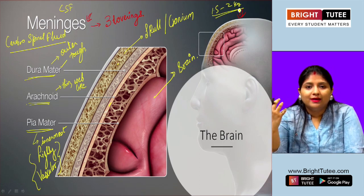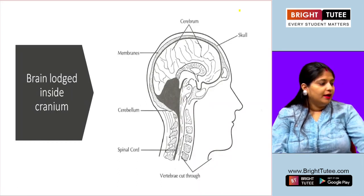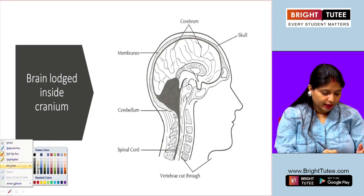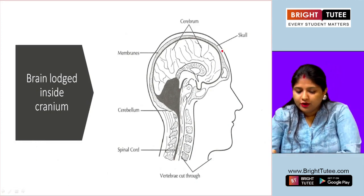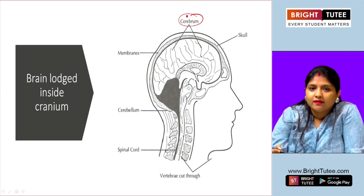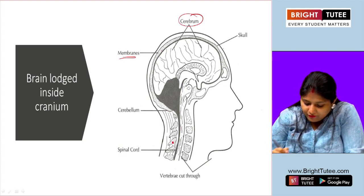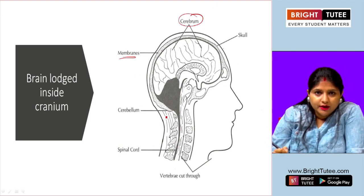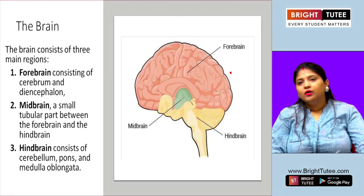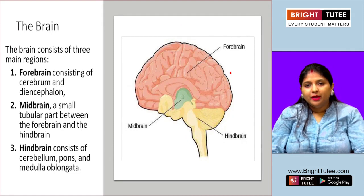This is the diagram of the brain inside the cranium. You can see the skull, the cerebrum, the different meninges layers, the cerebellum, and the spinal cord. We are going to study all of these in detail, but this is how the brain looks when it is inside the cranium.